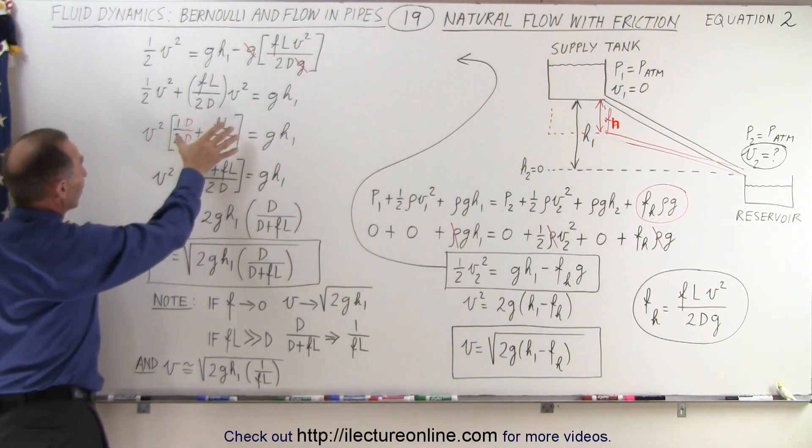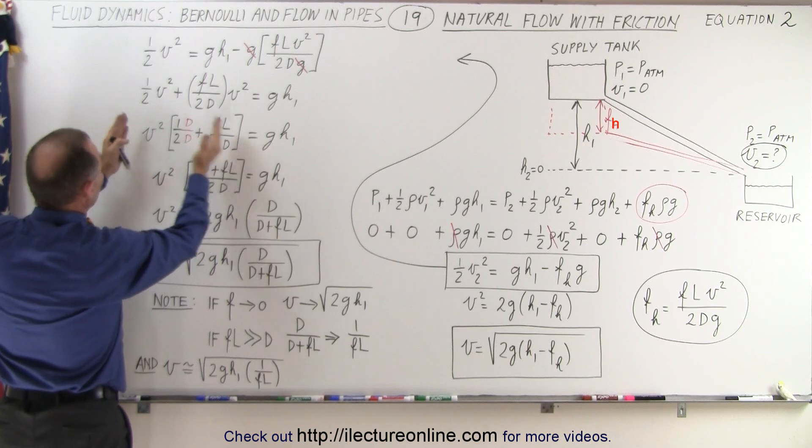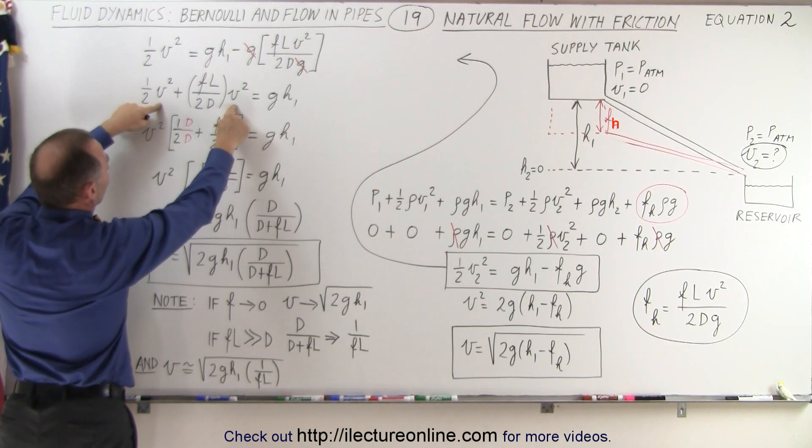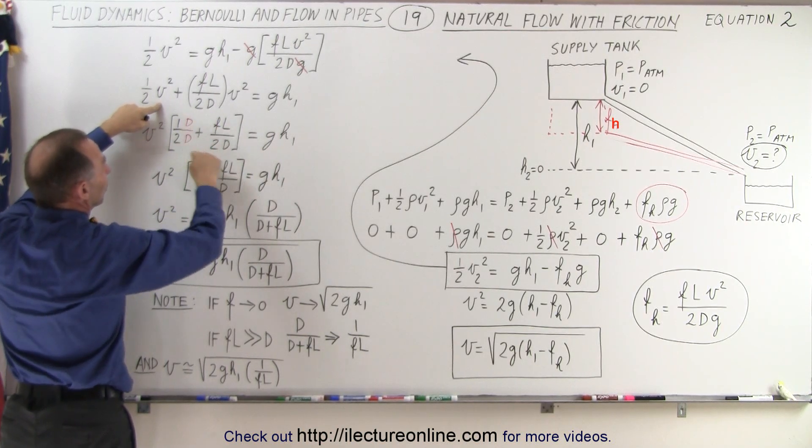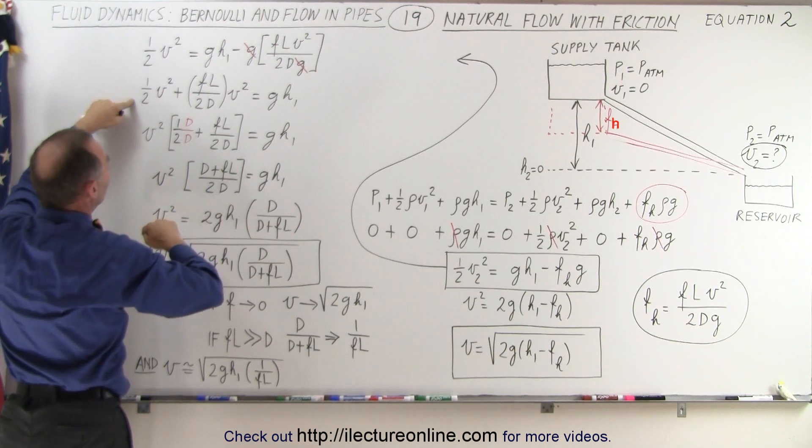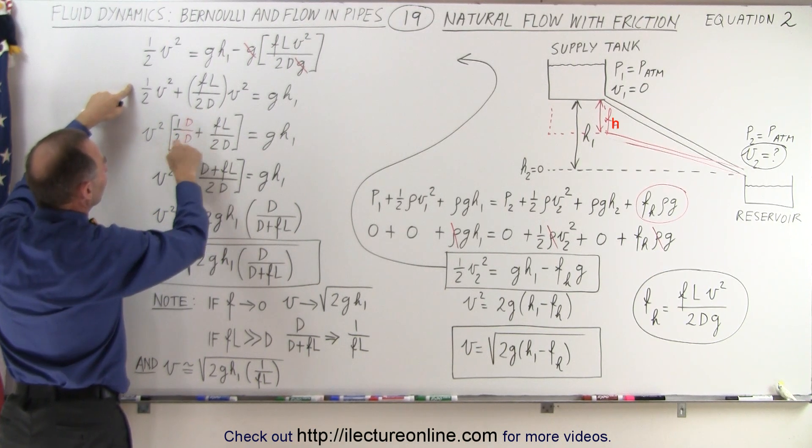Then we place what's inside the brackets here. So we first factor out the v squared from both terms and then we want to write it over a common denominator. So instead of 1 over 2, we write 1 times d over 2 times d.